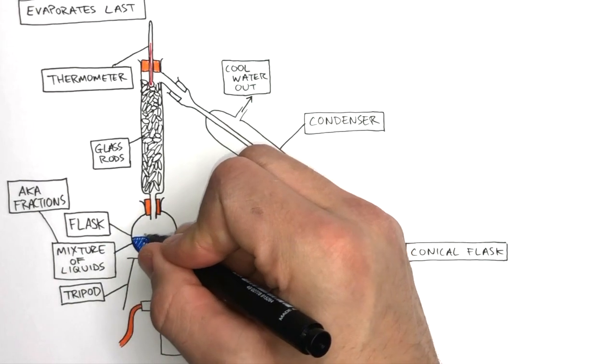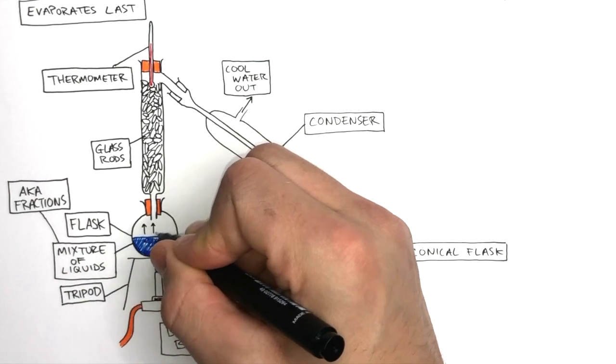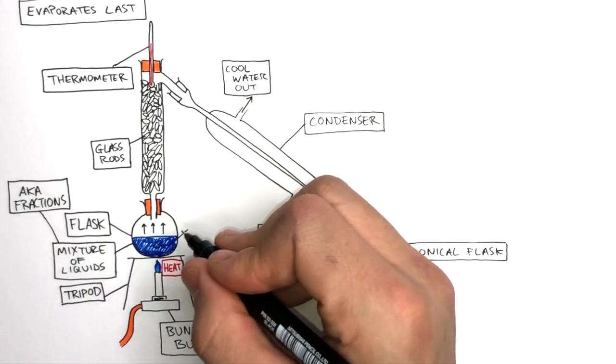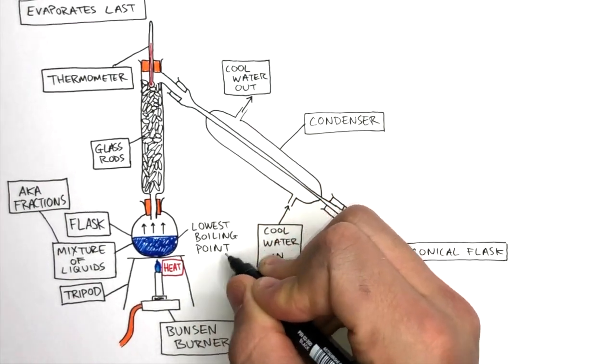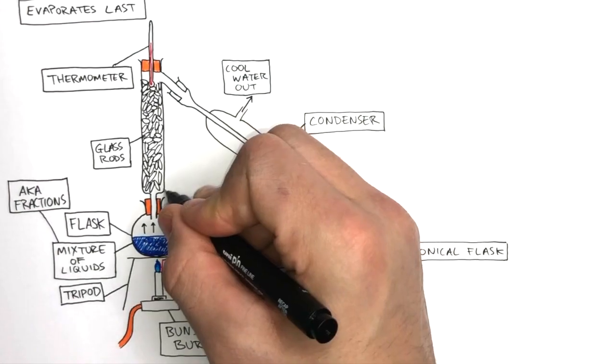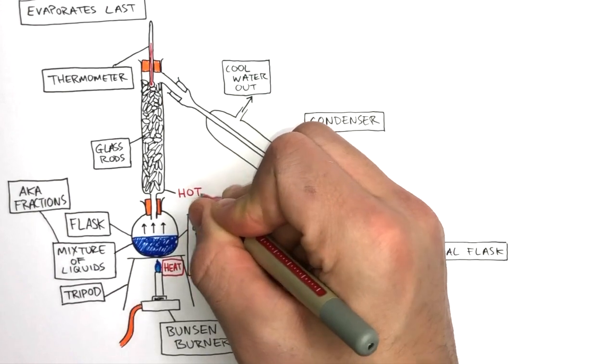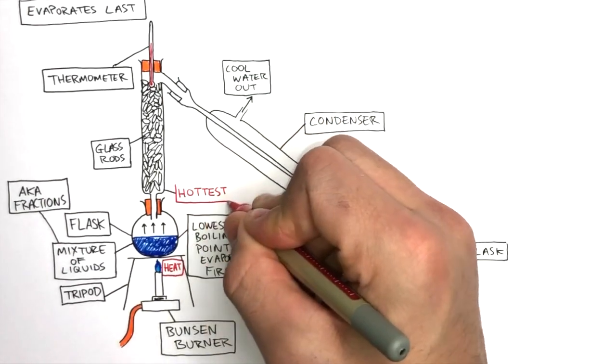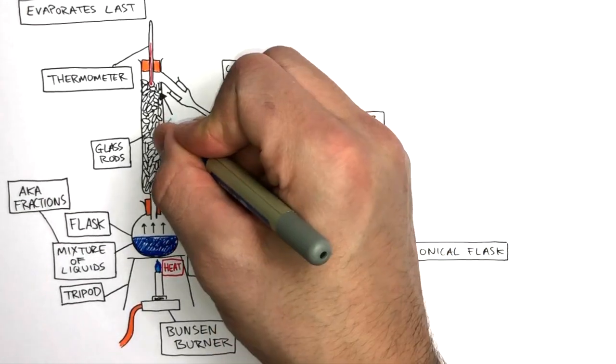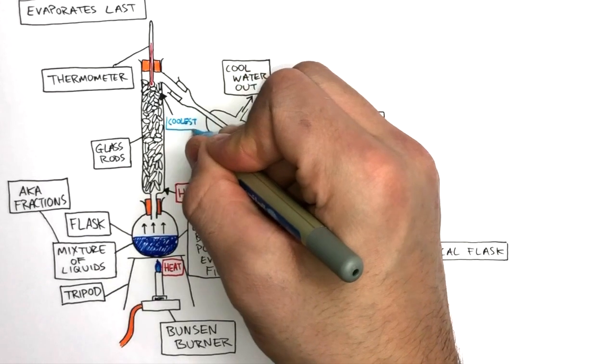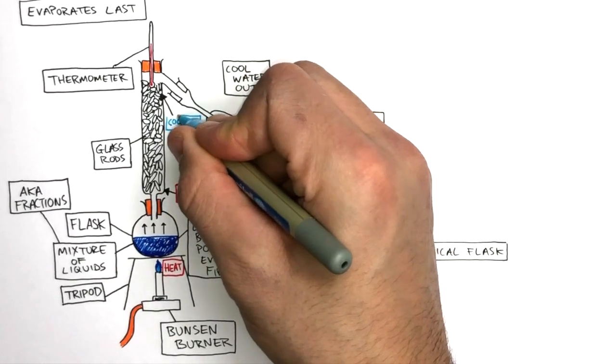So the heat from the Bunsen burner causes the liquid to evaporate, where the fraction with the lowest boiling point evaporates first. The fractionating column is hottest at the bottom, where it's closest to the heat source, and coolest at the top, where it's furthest away from the heat source.